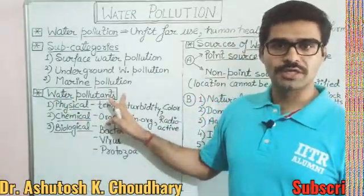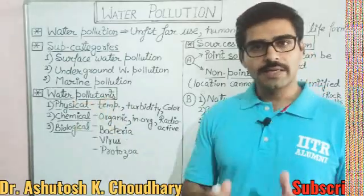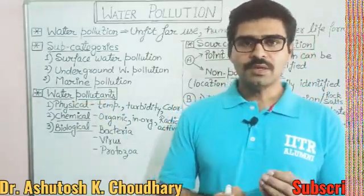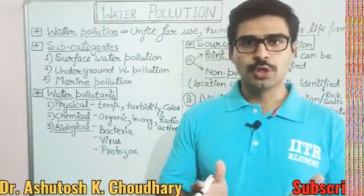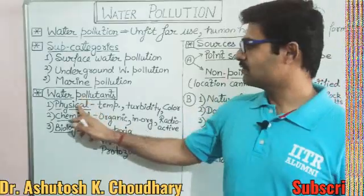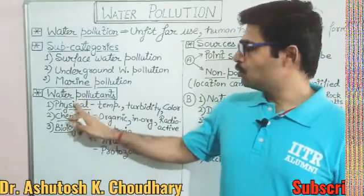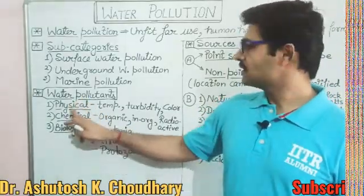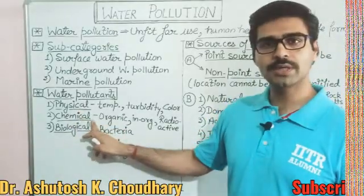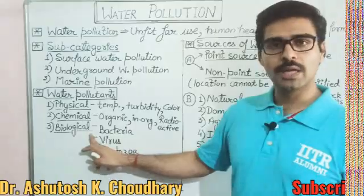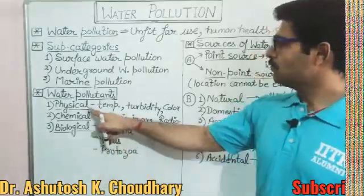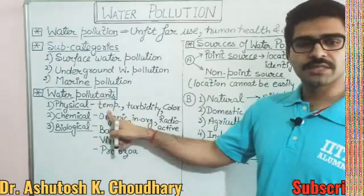Now you should know about water pollutants. A water pollutant means any agent that may be solid, liquid, or any other impurity — including colloidal matter. We can classify pollutants into three categories: first, physical pollutants; second, chemical pollutants; and third, biological pollutants.